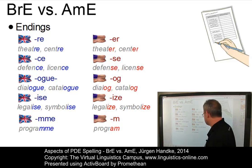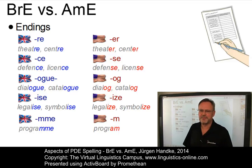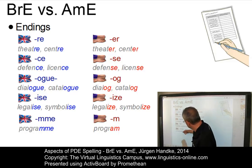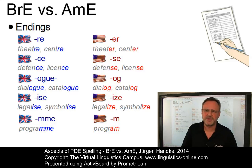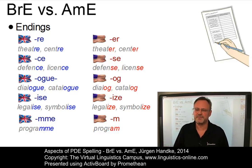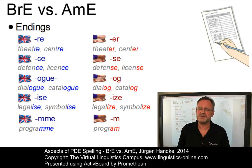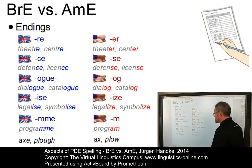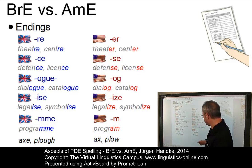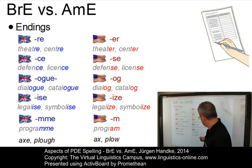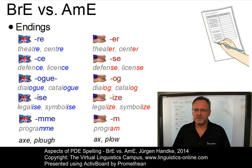There is also MME versus M in words such as 'programme'. Even in British English, there is now a tendency to write this word with just one M because it is so popular in information technology. This last case can be extended to several other words where American English applies a principle of shortening — for example, 'axe' and 'plough' in British English are reduced in American English: 'axe' without an E, and 'plough' with a simplified representation of the vowel OU.